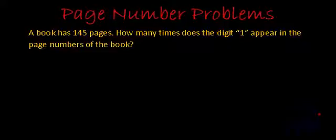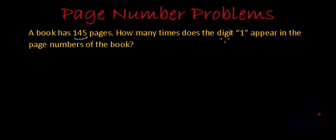Let's first read out the problem and then discuss how to solve it. A book has 145 pages. How many times does the digit 1 appear in the page numbers of the book? We will use a systematic approach. There are 145 total pages and we have to find out how many times the digit 1 appears in the page numbers.